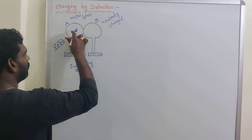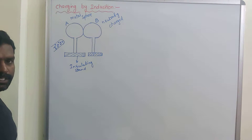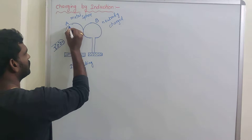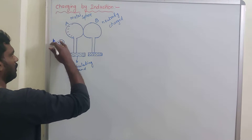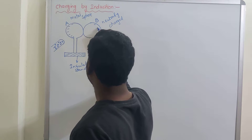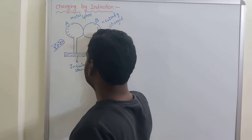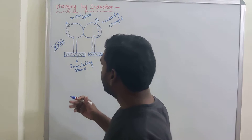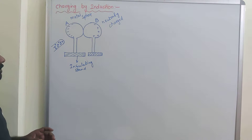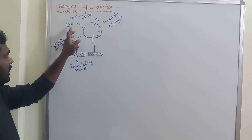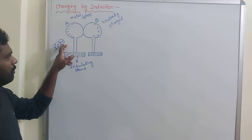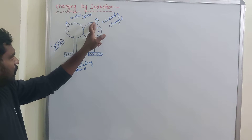The negative charges in the metal sphere are attracted towards the glass rod. Positive charges are tightly packed inside the nucleus, and the loosely bound negative charges will be attracted towards the glass rod. Positive charges will be accumulated on the right side of sphere B, because the positive charges on the rod attract the negative charges inside the metal sphere.